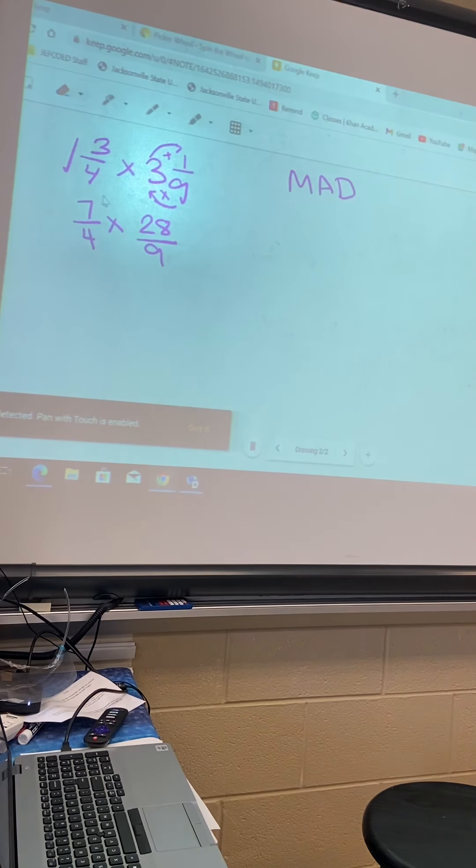So we're going to divide the 4 out of both of them. Okay, 4 divided by 4? 1. So slash it and put a 1. 28 divided by 4? 7. Slash it and put a 7. And then we multiply straight across, side by side. Multiply divide, side by side. What's 7 times 7? 49. And what's 1 times 9?